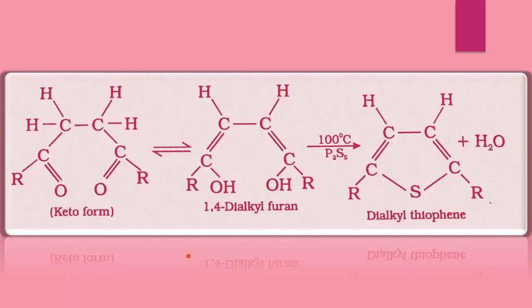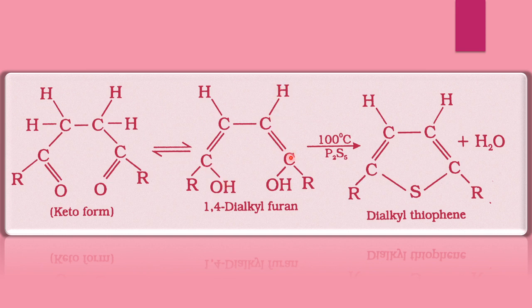The next method for preparation: 1,4-dialkyl furan reacts with phosphorus pentasulfide (P₂S₅) and is heated to about 100 degrees Celsius to form dialkyl thiophene. The structure of furan has C=C–OH and C=C–OH groups with R groups attached — alkyl group R is attached at these positions, so its name is 1,4-dialkyl furan.